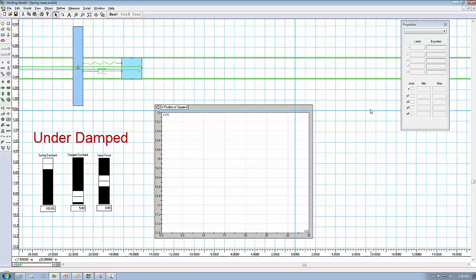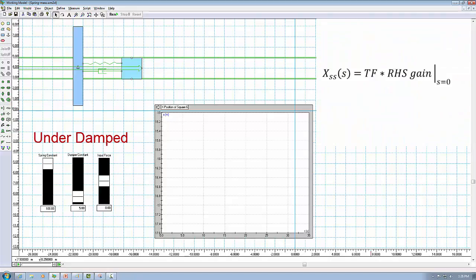When input is a step signal, the steady-state solution in the S domain is calculated by this equation. The steady-state solution equals to the transfer function times the right-hand side gain and evaluated at S equal to 0.